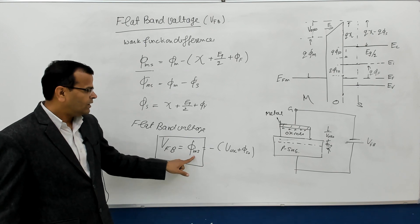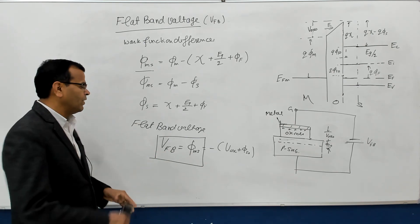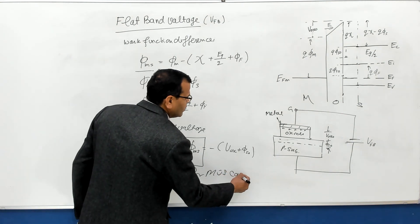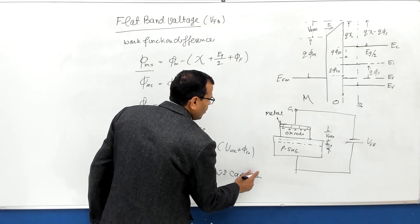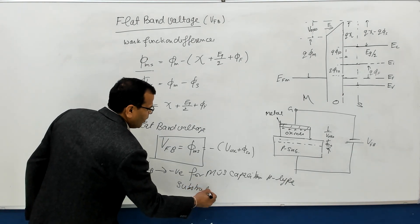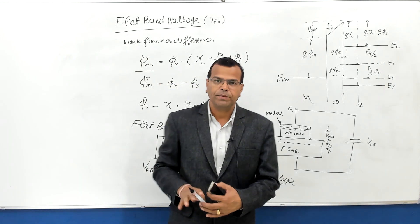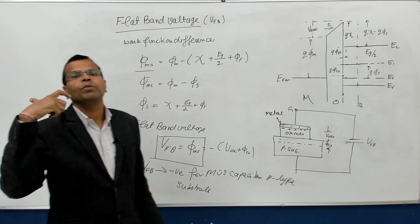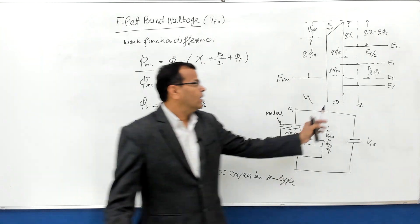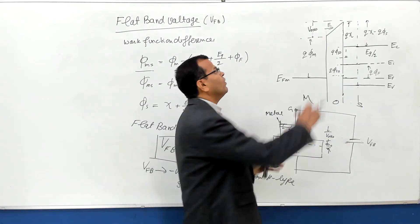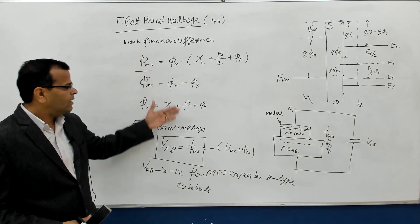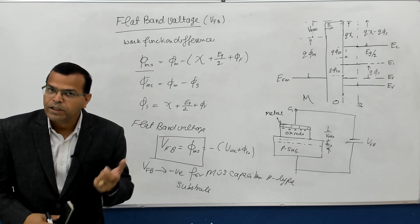Since the work function difference is negative, the flat band voltage is always negative for a MOS capacitor with a P-type substrate — that's the point you need to remember; there can be a one-mark question on it. The flat band voltage is the voltage to be applied across the MOS capacitor to make the bands flat at the oxide-semiconductor interface, and it is equal to the work function difference φMS.